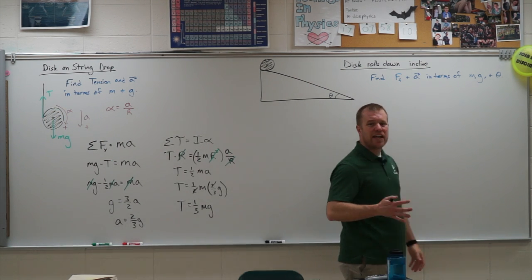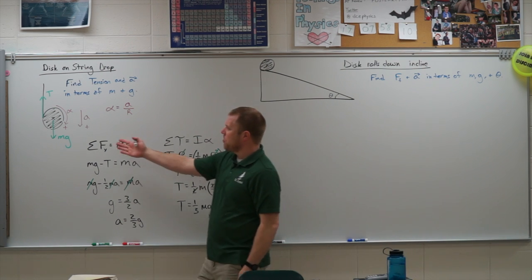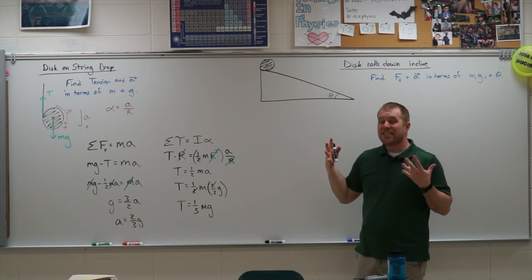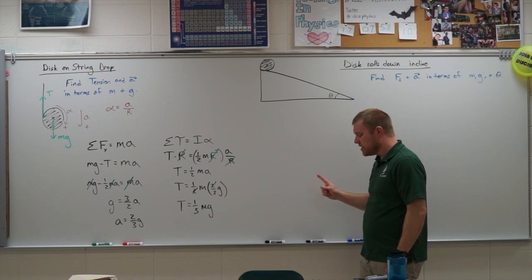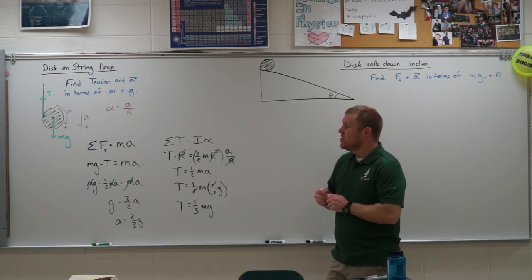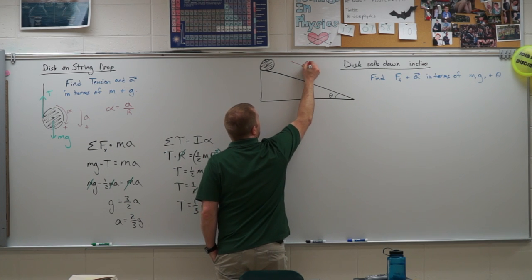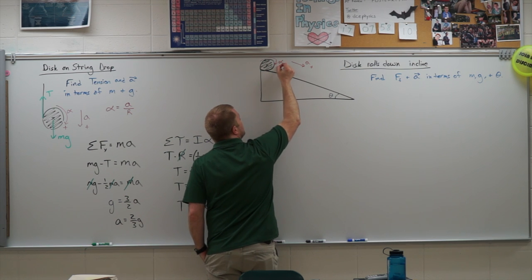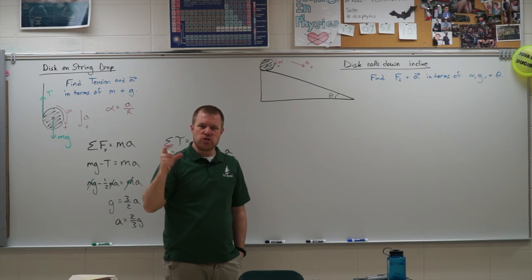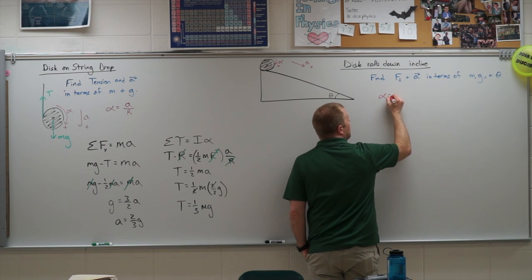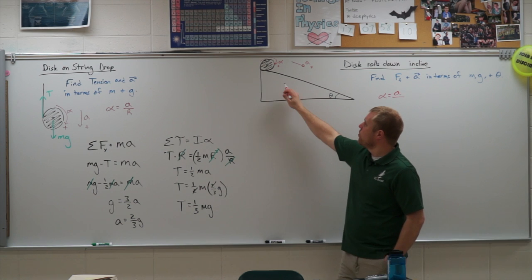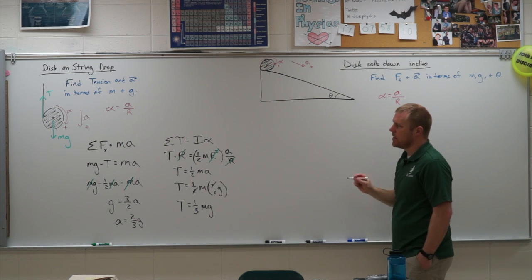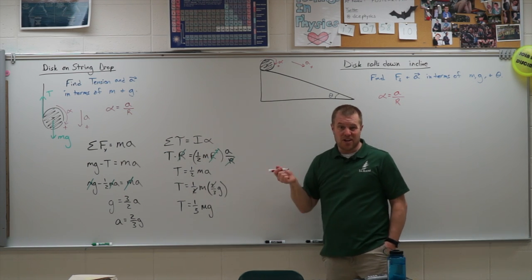Now let's look at a disc rolling down a sloped incline instead of a vertical one. We use the same setup. First, identify the accelerations: a linear acceleration down the slope, which I call positive, and a rotational acceleration, also called positive, so I can link them together. Alpha equals A divided by the connecting radius - where does it touch the surface? At the radius of the object. So it is capital R again, which will give us the same cancellation as before.